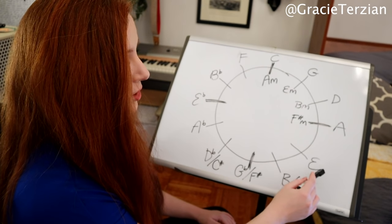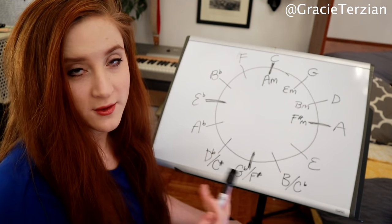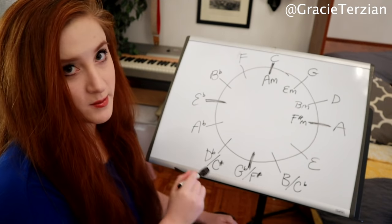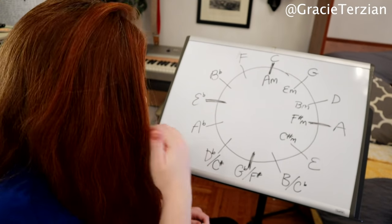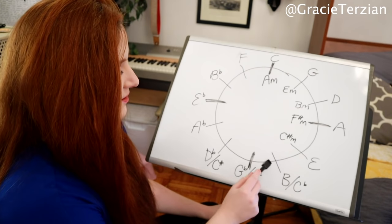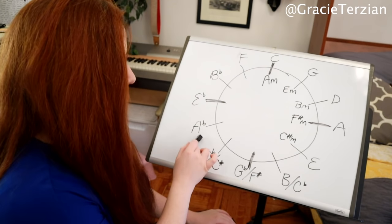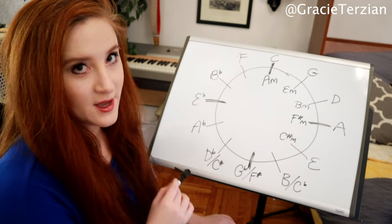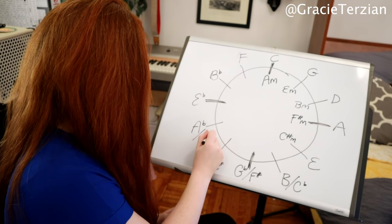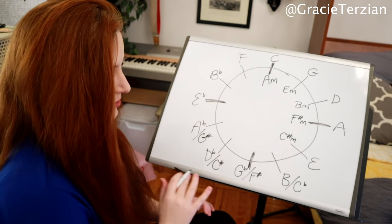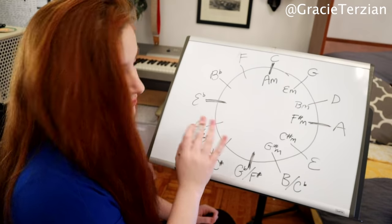For E major: move over three spaces and we get to D flat or C sharp. Since E major has sharps in it, we go with C sharp minor. For the key of B: move over three spaces and we get to A flat. Since B is a sharp key, the enharmonic equivalent is G sharp. So G sharp and A flat are the exact same note — I'll write G sharp minor here, keeping sharps with sharp keys and flats with flat keys.